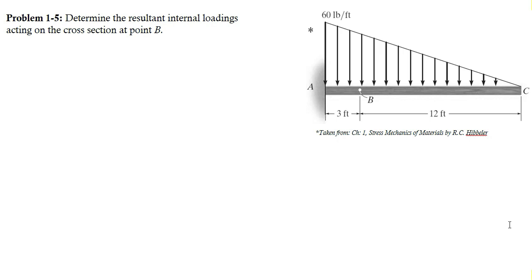In this problem it is required to determine the resultant internal loadings acting on the cross-section at point B. As you know, for the determination of internal loadings at any point we have to cut the body at that point and take either of the portions. For example, in this case if I take the right portion of the beam.